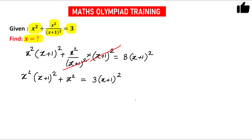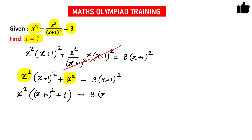Now we have x squared in both terms, so we can take x squared as a common factor. We will have x squared times [(x+1) whole squared plus 1] equals 3 times (x+1) whole squared.